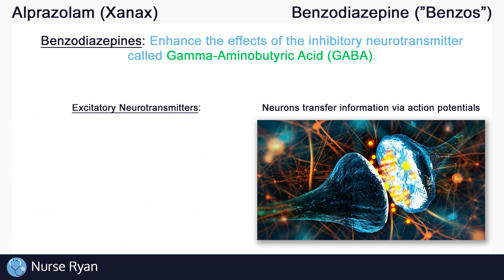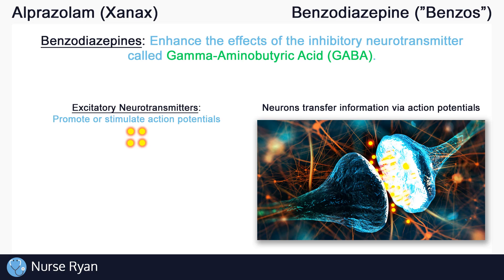First, we have excitatory neurotransmitters, which we'll say are these little yellowish-red circles you see on the left and right. Just to simplify things, you can think of excitatory neurotransmitters as the ones that are excited — the ones that are promoting or stimulating action potentials. So they are exciting or encouraging whichever neurons that they're acting on, meaning that information can travel more easily or more quickly from neuron to neuron.